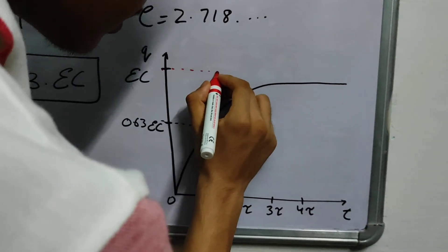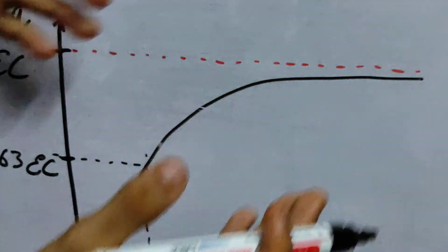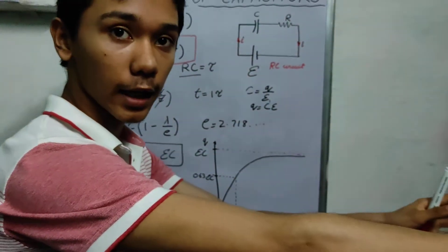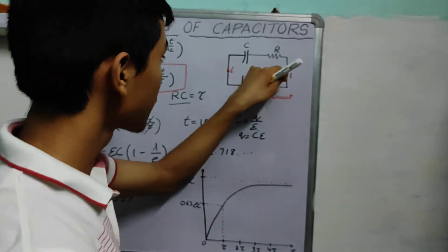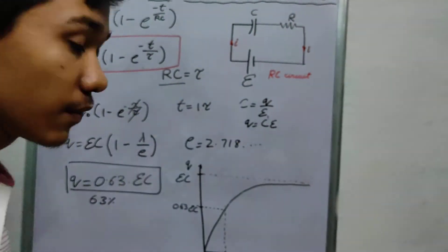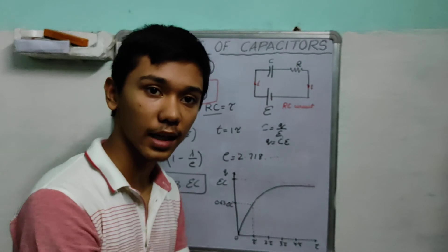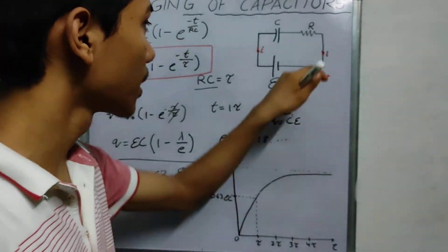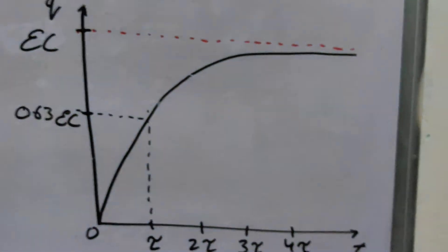So in theory, these two lines will meet at infinity. So after, in theory again, it will take infinite time for this battery to completely charge this capacitor, to develop a charge EC on the capacitor. It will take infinite time. But, in practice, when we perform practicals, it takes a very, very small amount of time to develop around 99% of the charge on this capacitor. Because that's how the graph looks. And I hope you understood these things quite clearly.